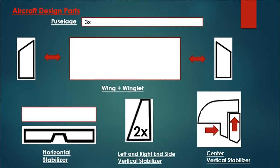These are our aircraft design parts. We use recycled water bottles for the fuselage and insulation foam for the rest of our parts. The wing will have a winglet as it can reduce wingtip vortex. We also have the horizontal stabilizer, two left and right side vertical stabilizers, and one center vertical stabilizer with a rudder on it.